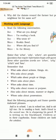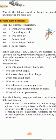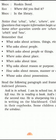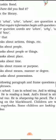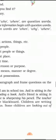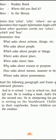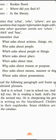Read the following paragraph and frame questions on the italicized word. In the first sentence: Anil is in school. The italicized answer is 'in school', which is a place. For place, 'where' is used. So the question is: Where is Anil? He is in school too. Next: Anil is sitting in the left row — the question is: Where is Anil sitting?